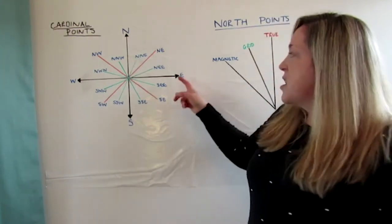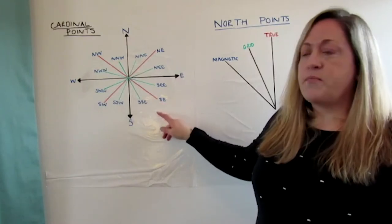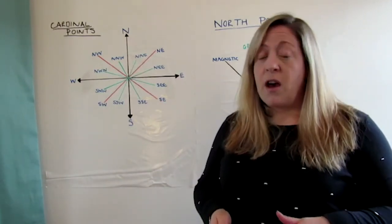We mostly use the cardinal points on the black lines or the red lines. Those on the green lines are the points broken down even further and for information.